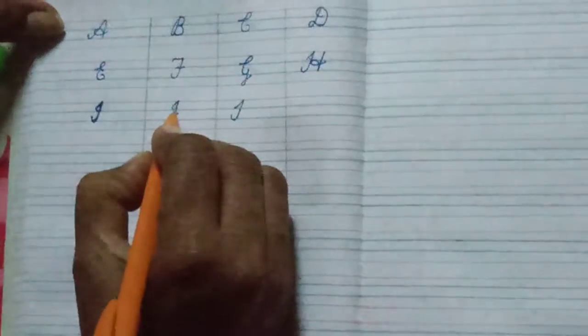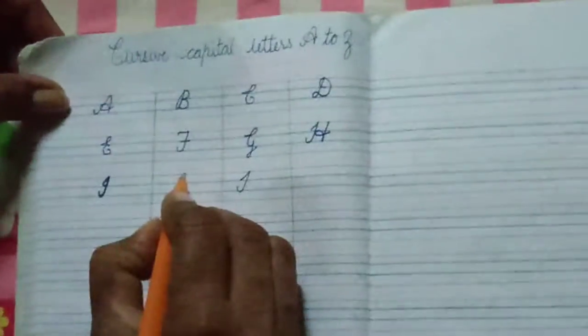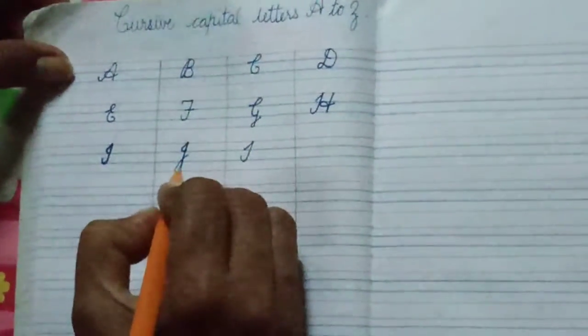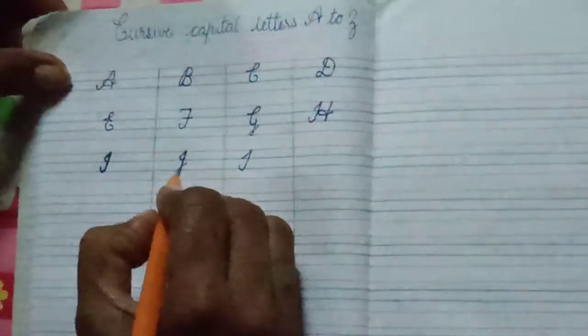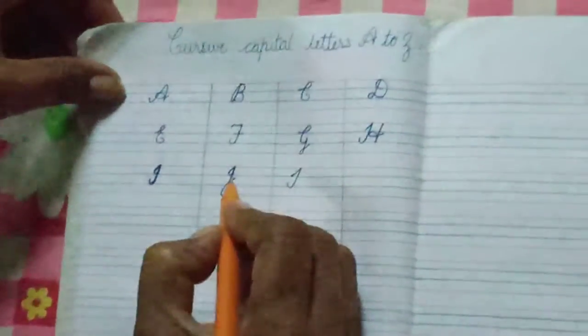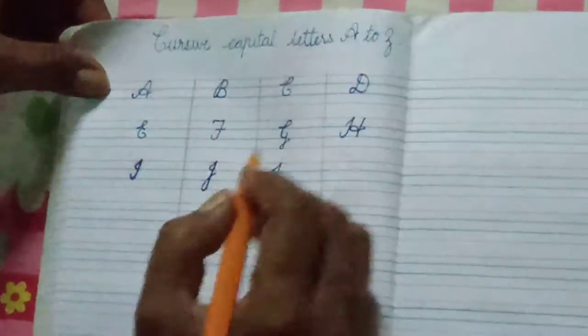J. Start like I only. You have to come down, touch the fourth line and come up between the second and third line.